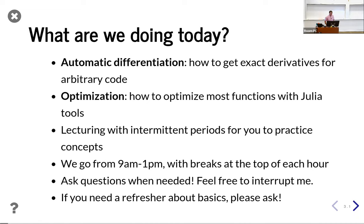I'm going to be talking about JuMP — Julia for Mathematical Programming — which is a very specific domain-specific language for describing optimization problems. JuMP happens to be kind of a monolith in the Julia ecosystem, so it'll be nice to share that with people. There'll be intermittent periods where I put up a concept check and we'll work through some examples together. You're free to do those or not. I'll walk through the examples myself to show the answer and how I think about doing it.